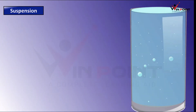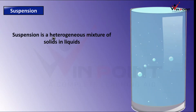We can discuss suspension. We can make suspension using water and chalk powder. When we add chalk powder into water, the chalk powder is not going to dissolve — it will be suspended in the water. Suspension is a heterogeneous mixture of solids in liquid. Chalk powder is solid and water is liquid. Heterogeneous means the concentration is not going to be equal everywhere.